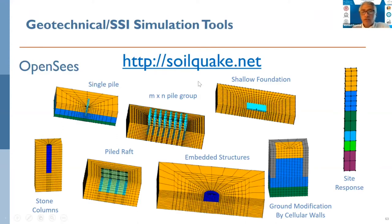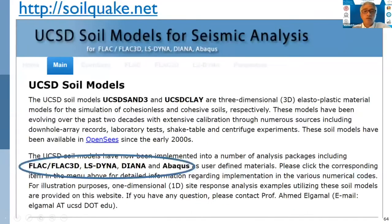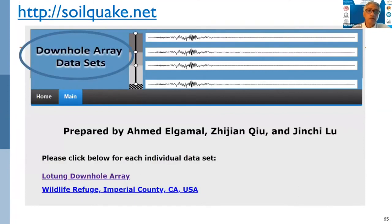Some of these tools are available at soilquake.net. As mentioned earlier, these tools were developed for OpenSees, and more recently we have made some of them available for use in other codes like FLAC, LS-DYNA, DIANA, and Abaqus. If you're interested in calibration and actual data from recorded earthquakes from downhole arrays, data from two locations has been uploaded and is available to download at the site.